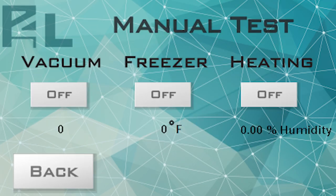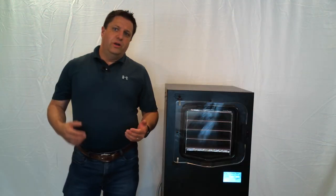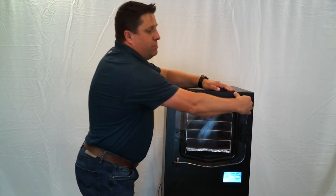You see the options to turn on the three main functions of the freeze dryer. Press the vacuum button to turn on the vacuum pump. You will hear the noise of the pump turning on, and within 30 seconds you will not be able to open the door at all.